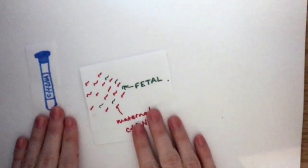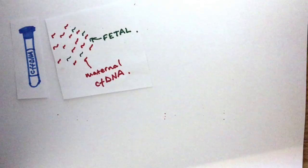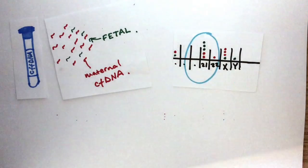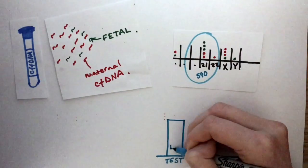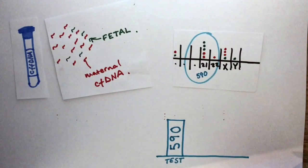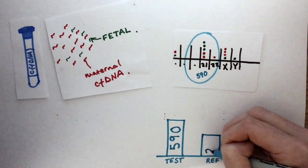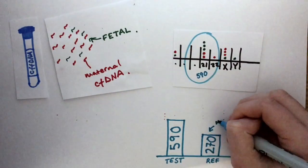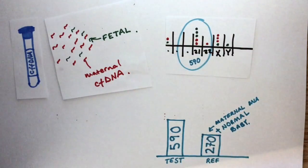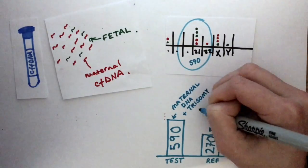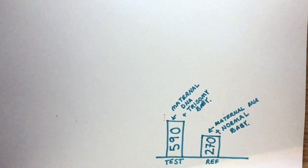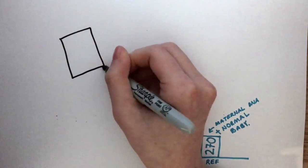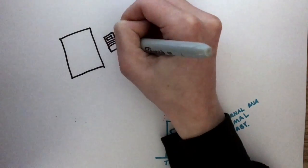So how do we then recognize trisomies? For example, trisomy 21. Say you got 590 reads for chromosome 21 from the sample. Well, you would compare that to a reference, which was a mother and a normal baby. Maternal DNA and a trisomy baby will result in more reads in the chromosome 21 region, for example, than a mother and a normal baby. And this is how you can test to see if there is a trisomy.